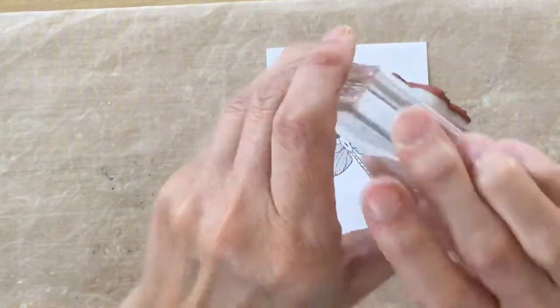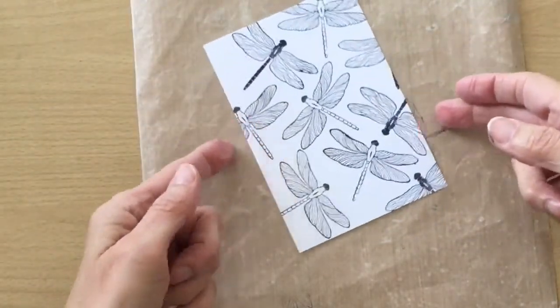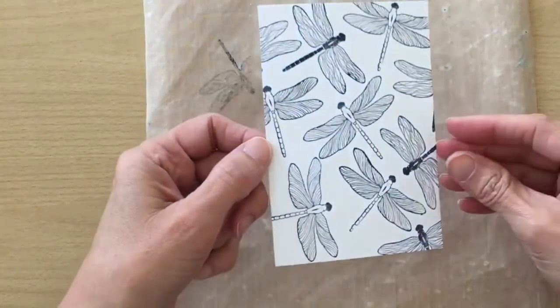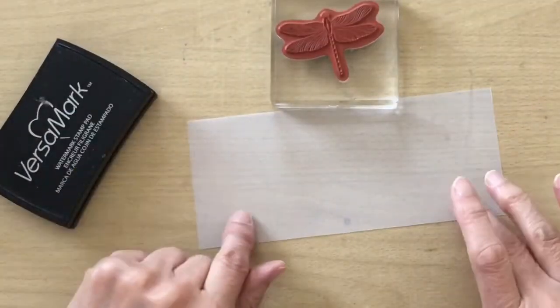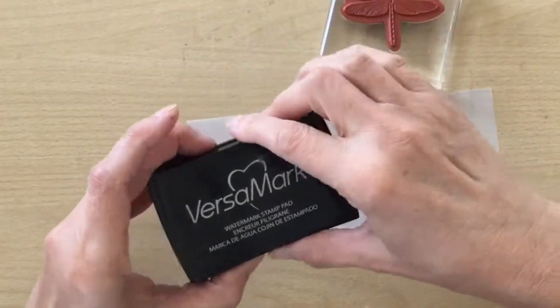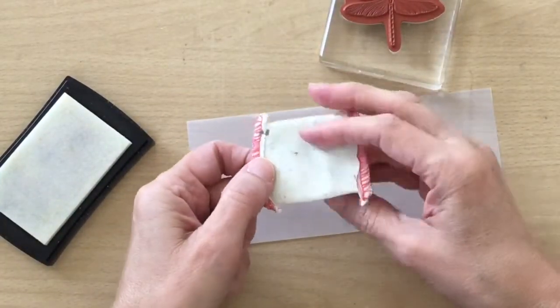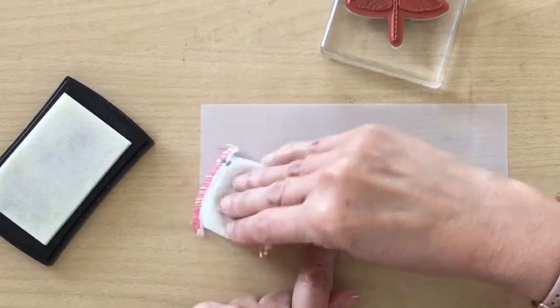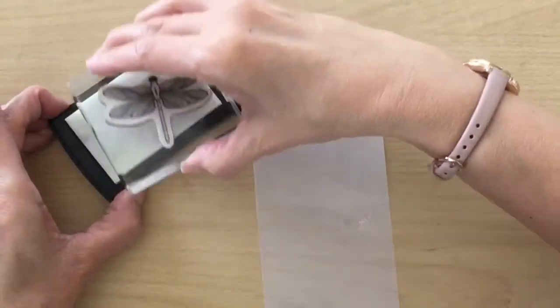So I've randomly stamped my dragonflies. I'm going to put this to one side. We're now going to do some stamping onto vellum. So I've cleaned my dragonfly. I have some VersaMark ink. I'm just going to use my embossing buddy just over one end of this and then I'm going to ink up my dragonfly.